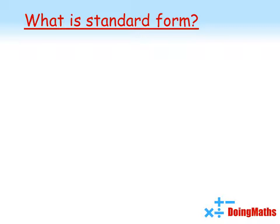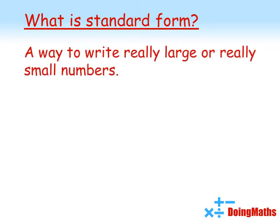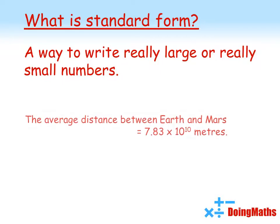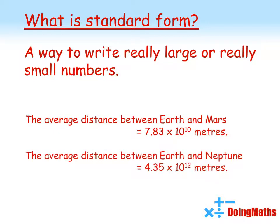So firstly, what is standard form? It's basically a way to write really large or really small numbers in a way that's a lot easier to compare. For example, the average distance between Earth and Mars is 7.83 times 10 to the 10 meters, and the average distance between Earth and Neptune is 4.35 times 10 to the 12 meters. If I was to write them as normal numbers they would be really large and very difficult to compare. But using standard form I can see that the distance between Earth and Neptune has got a bigger power of 10, hence it is a bigger distance — about 100 times larger.